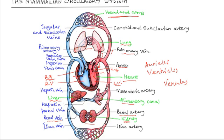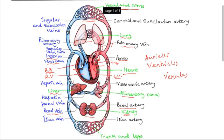The neck and lower part of the body drain their blood into the inferior vena cava. That is the blood coming from the liver through the hepatic vein, coming from the kidney through the renal vein, coming from the trunk and the legs through the iliac vein. All these drain into the inferior vena cava.